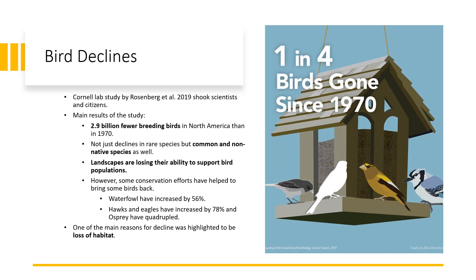A great study came out in 2019, known as the 3 billion birds paper, and it really shook scientists and citizens alike. The main result is that we have lost 3 billion breeding birds in North America since 1970. This is not just declines in rare specialist species, but our common species that we see at our feeders are declining — and even non-native species like European starlings are also declining. This shows that landscapes are losing their ability to support bird populations, which is extremely serious.